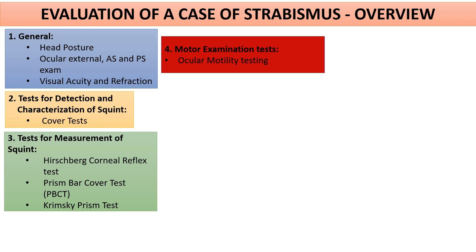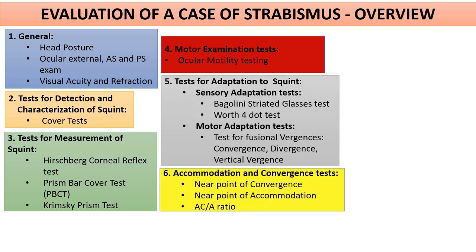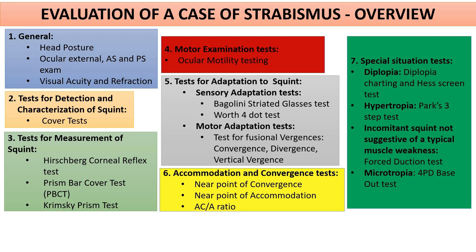Since I will be dealing with incomitant squints in part 3, I will not be discussing ocular motility examination in this video. After ocular motility comes tests for adaptation to squint, then tests for accommodation and convergence — including near point of accommodation, near point of convergence, and the AC/A ratio. There are also special situation tests: if diplopia is present, diplopia charting and Hess screen; if hypertropia is present, the Parks 3-step test; forced duction test for any concomitant squint not suggestive of typical muscle weakness; and if microtropia is present, the 4 prism diopter base-out test.